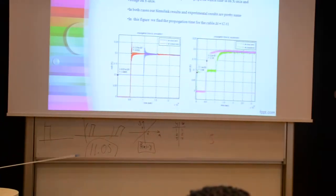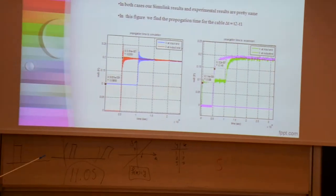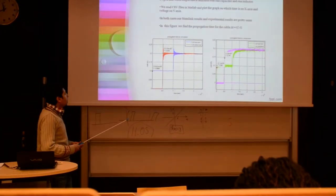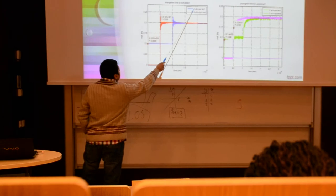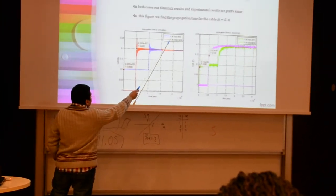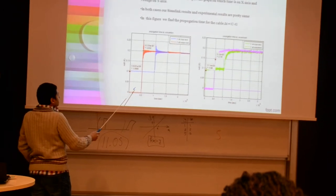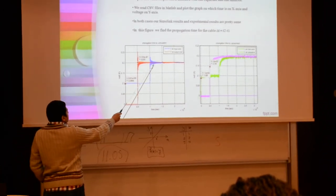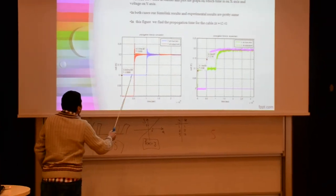And this is the verification part for open end both in Simulink and MATLAB. Here, if we compare, the blue line is for the input end and the red is for the output end. If we compare, we see it is again 0.2 volts, the voltage.